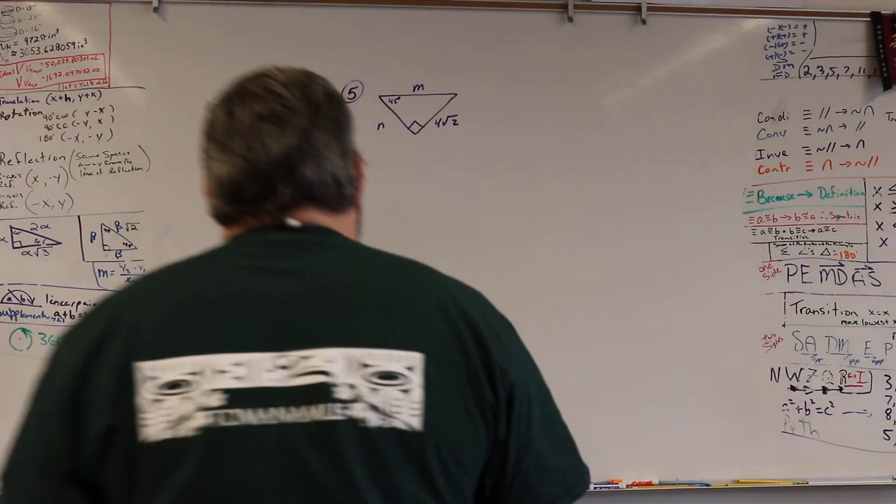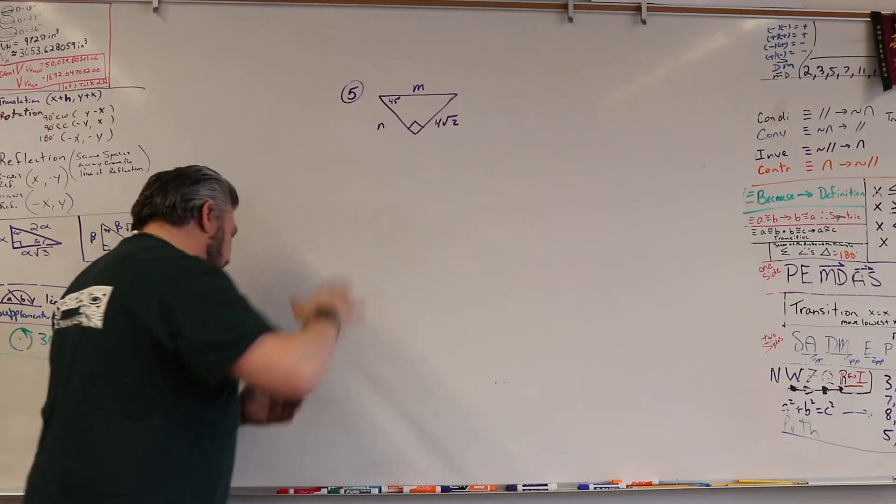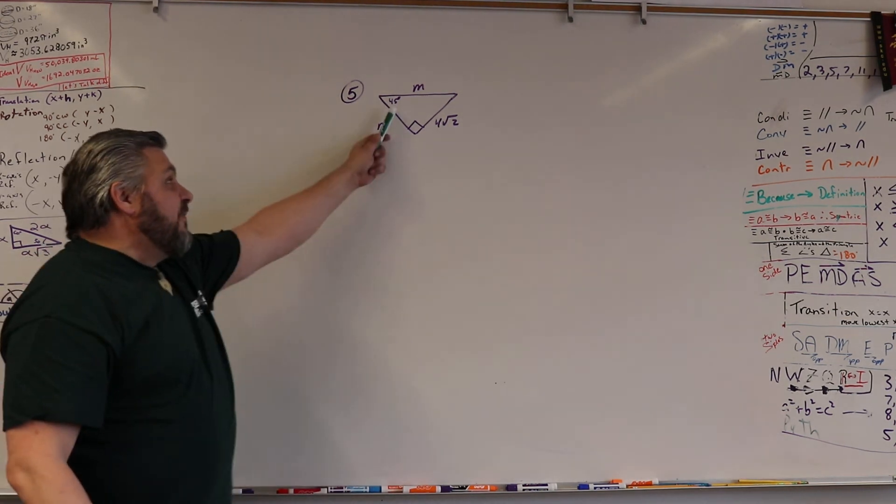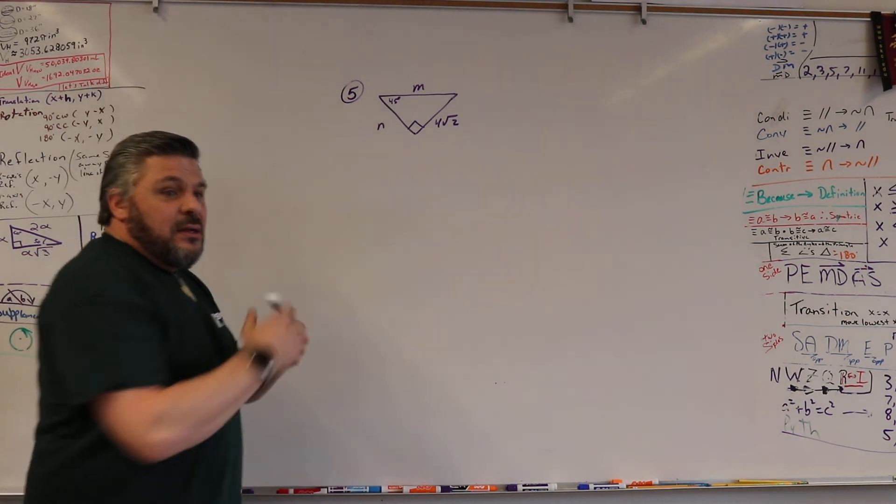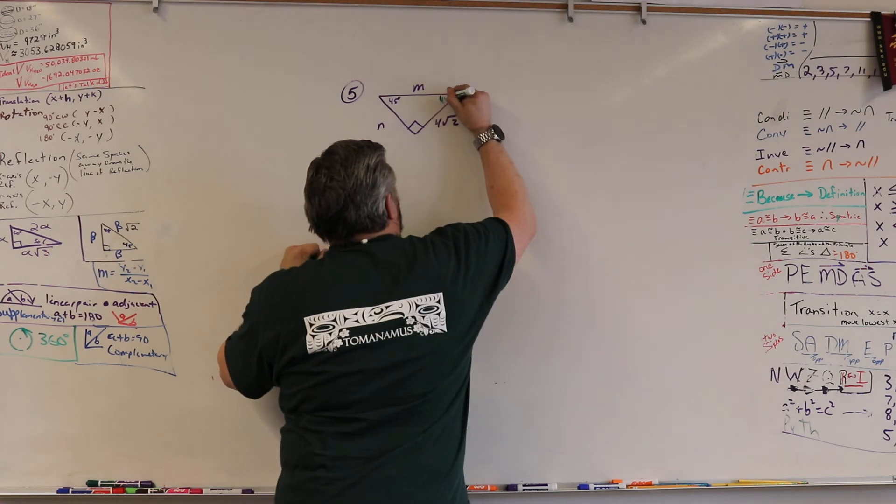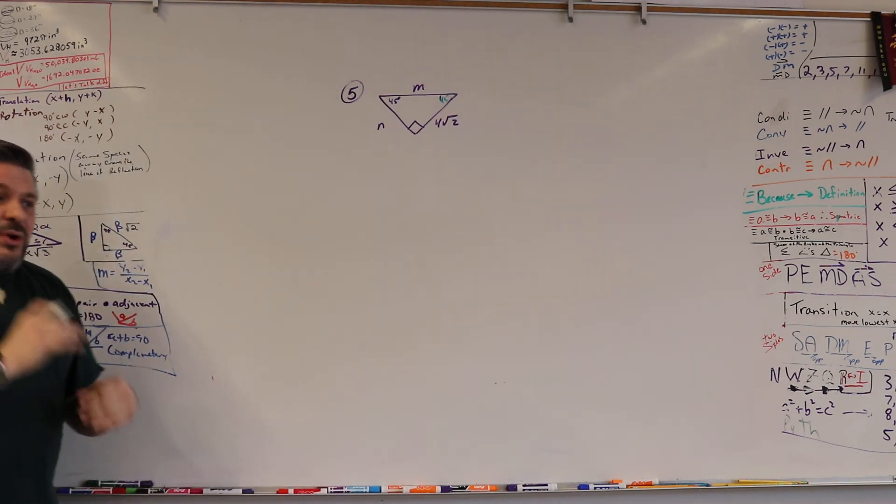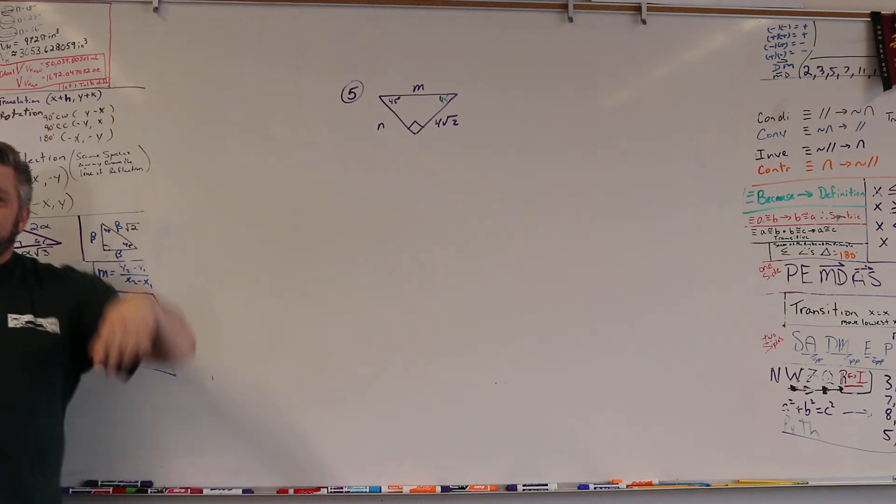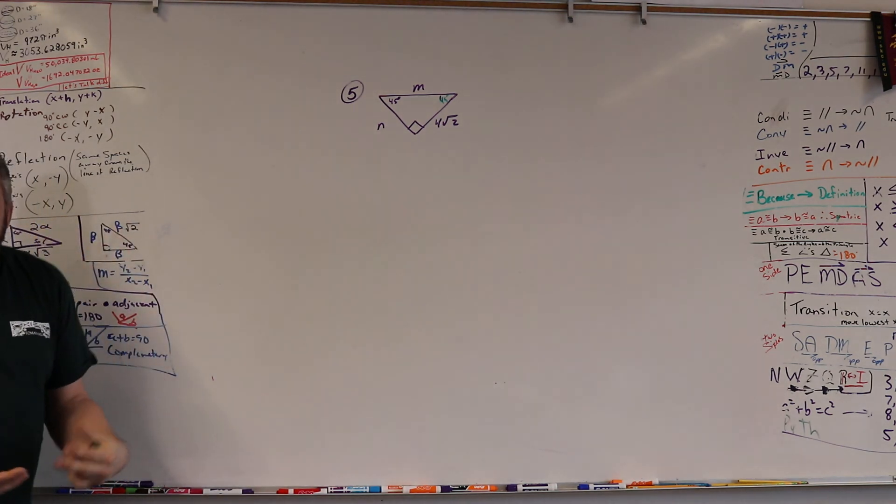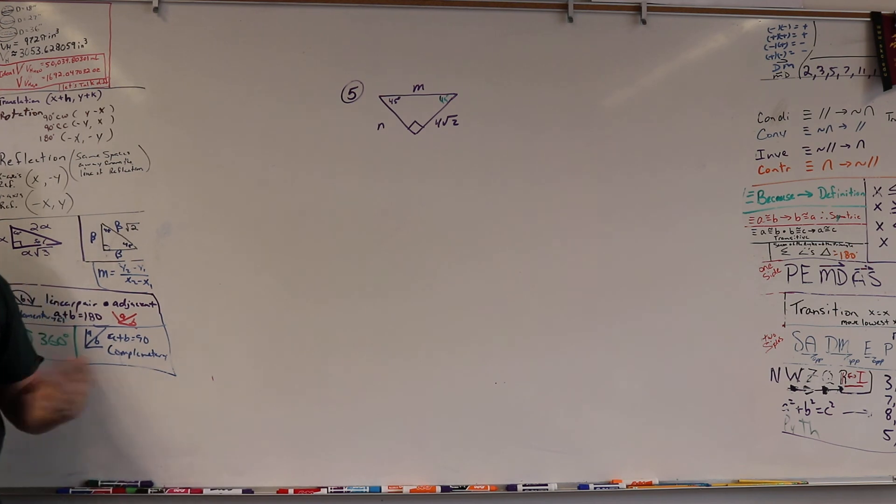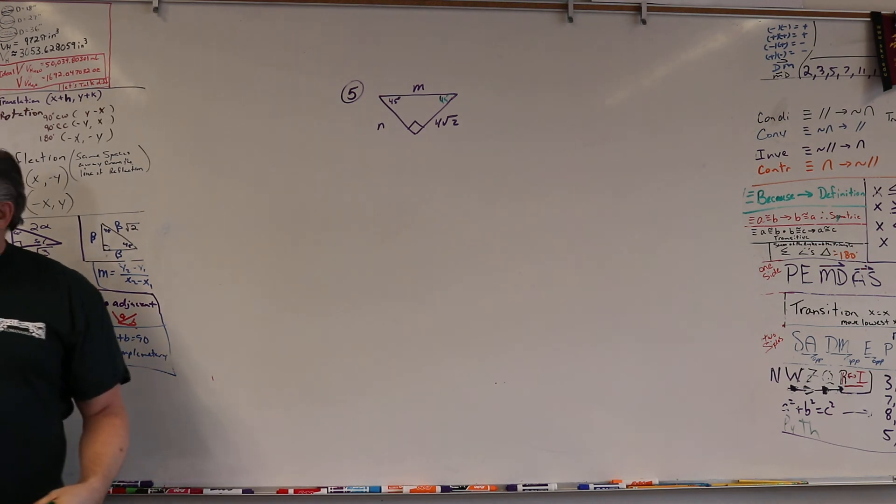So number five is a 45-45-90 triangle. I know right away if this is 45 and this is 90, then I know this is a 45-45-90. By this point in the game, you don't have to say 90 plus 45 plus B equals 180 and then figure it out. We should know that by now.